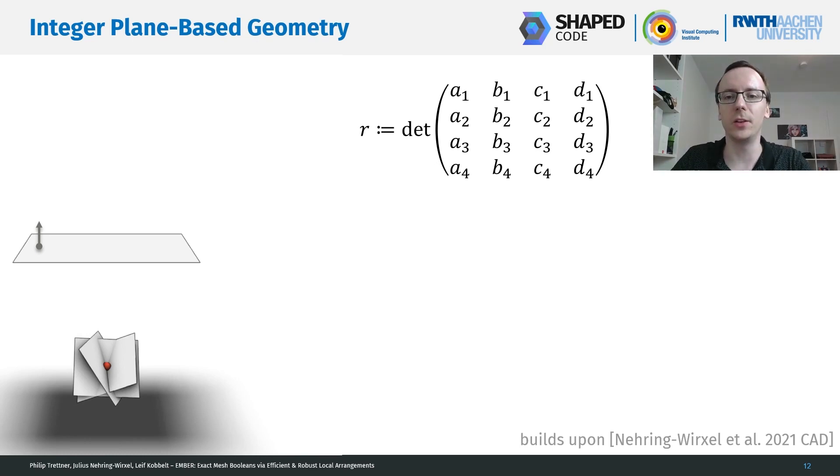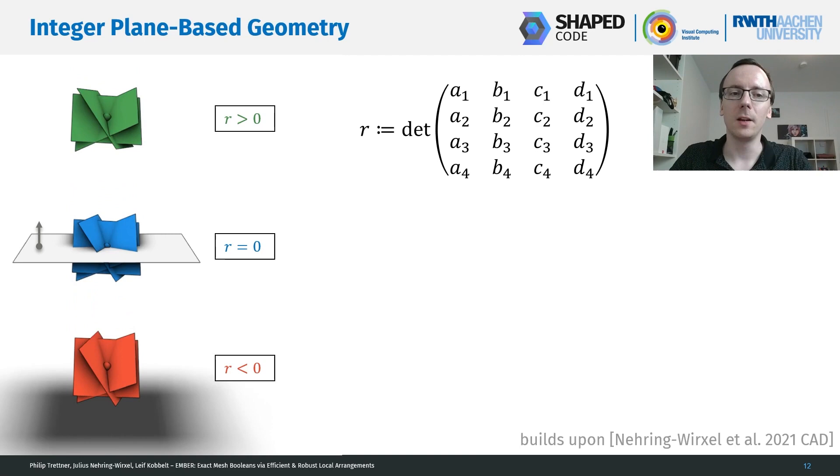And to answer that, we compute this 4 by 4 determinant consisting of the plane coefficients. And depending on the sign of this determinant, we know if the point is on the positive, negative side, or if the point is exactly on the plane.